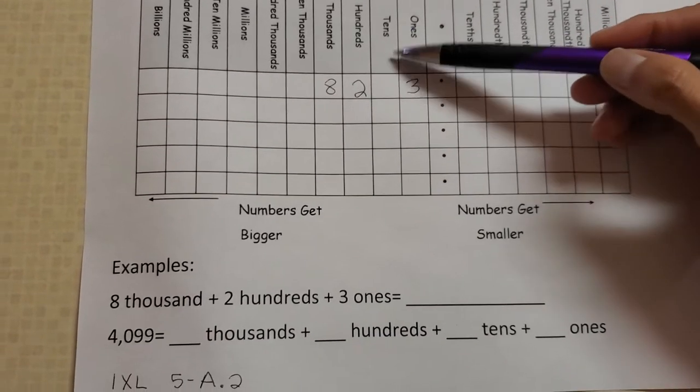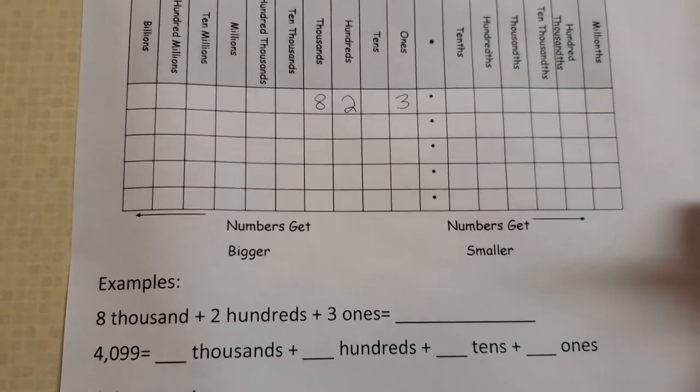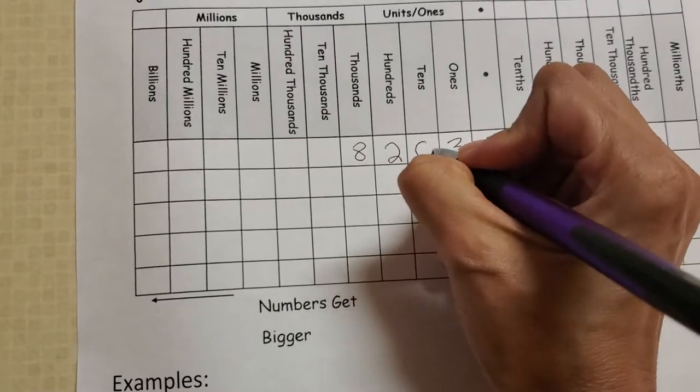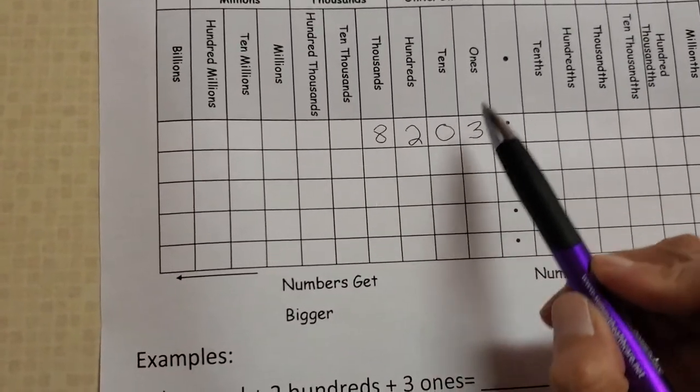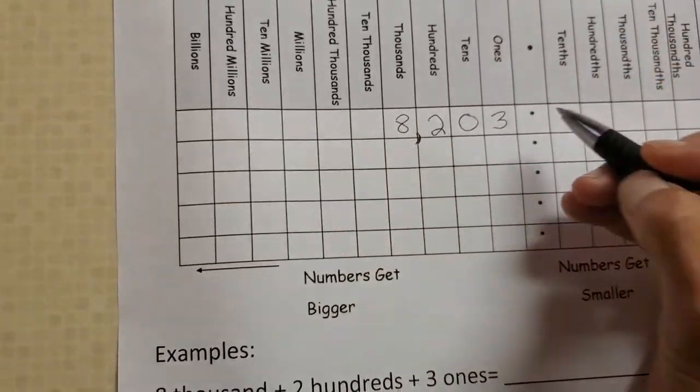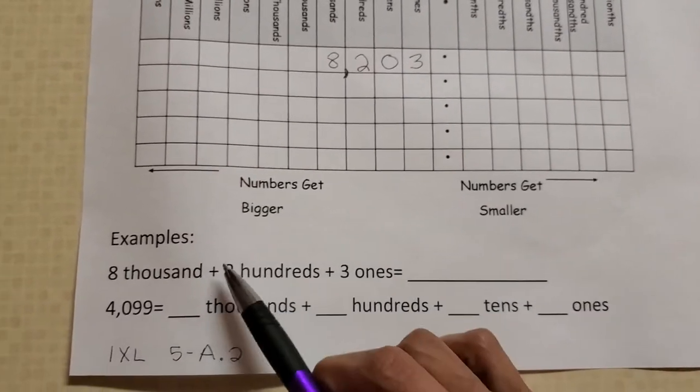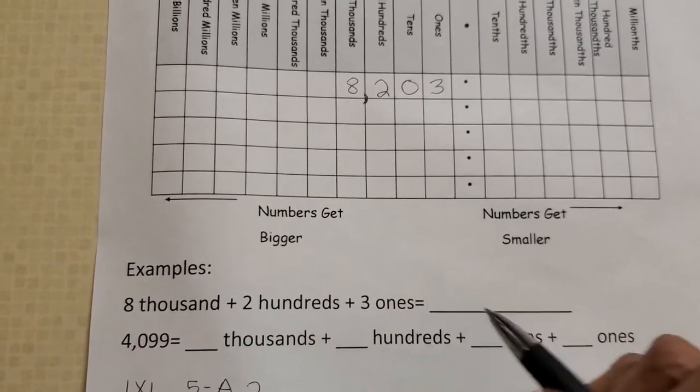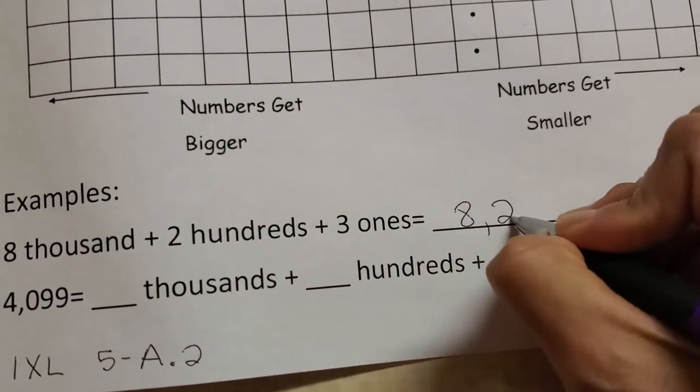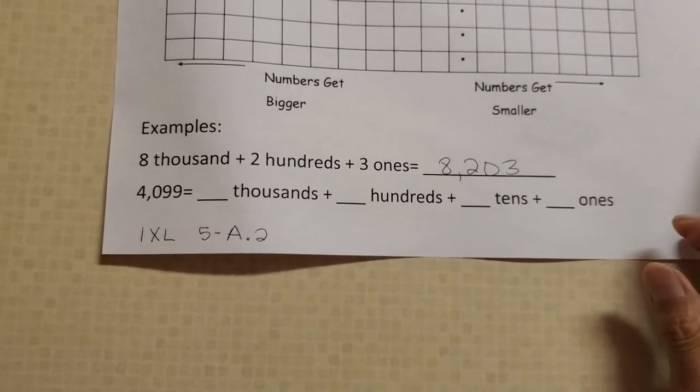You'll notice here we did not have any tens. So if we had no tens, you remember what number to put there? If you said zero, you are correct. And remember, third number - one, two, three - and that's the third number from the decimal here. So if we were to write this in standard form, we would write 8,203. Don't forget that zero because it makes a big difference.